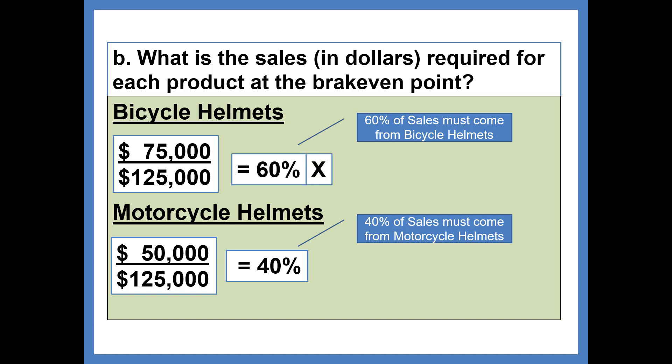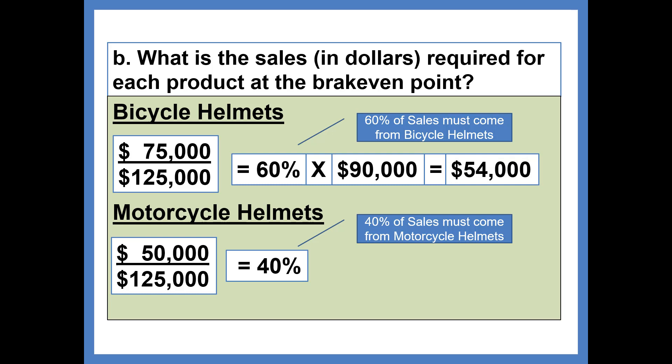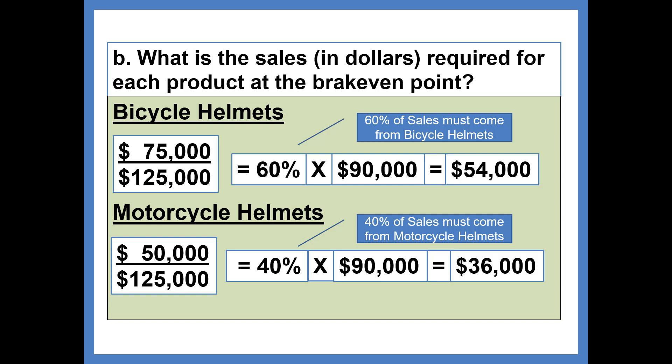Now we multiply by the overall break-even point of $90,000, and we find that sales must be $54,000 from bicycle helmets and $36,000 from motorcycle helmets at the break-even point. This totals $90,000, so the company has to sell $90,000 to break even — $54,000 from bicycle helmets and $36,000 from motorcycle helmets. If the mix is any different than this, then we will not break even.